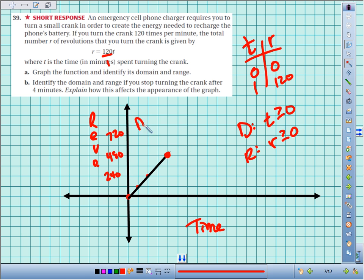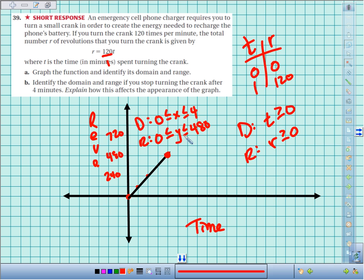Now the difference is the domain goes from zero to four minutes, so I'd say zero less than or equal to t less than or equal to 4. The range: the lowest is zero, the highest is 480, and you hit everything in between. So you'd say zero less than or equal to r less than or equal to 480, or you could say revolutions are between 0 and 480.